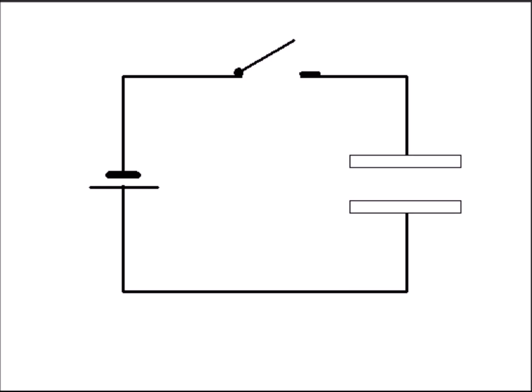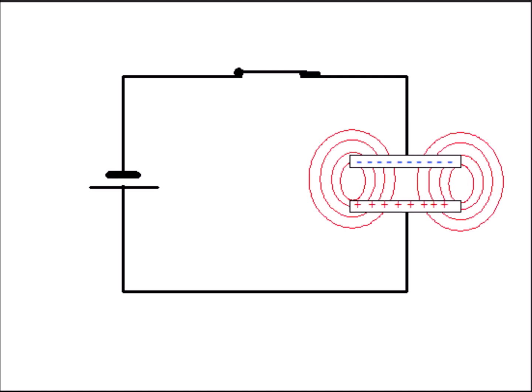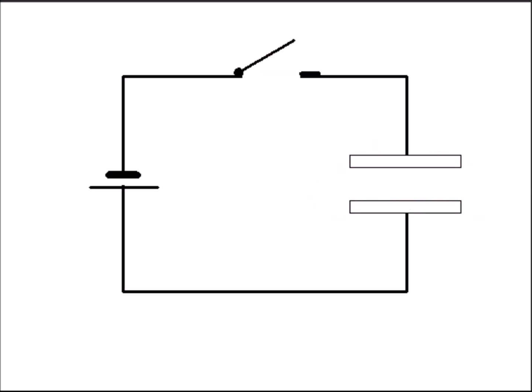Capacitor plates also have a magnetic field when charged. It results from the electric current in the thickness of the plate, necessary for the charge of the condenser. As soon as the capacitor is charged, the magnetic field disappears. No electric field or magnetic field can arise if there are neither electrons nor electric charges.